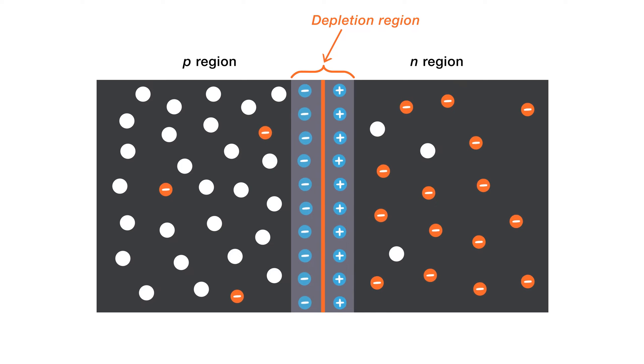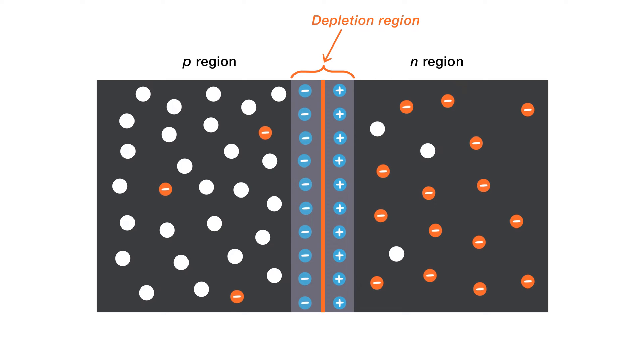In reality, the depletion region is formed in an incredibly short amount of time and its width is very thin compared to the p- and n-regions. The depletion region will continue to expand until the total negative charge in the depletion region repels any further diffusion of electrons into the p-region. This time, the depletion region acts as a barrier to the movement of electrons across the junction.